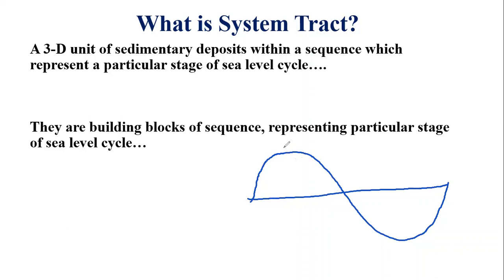A system tract represents a particular stage of the sea level cycle. The system tract that develops during the falling stage of the sea level cycle will be different from the system tract that develops during the rising stage of the sea level cycle.